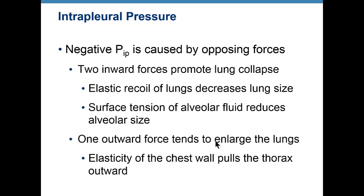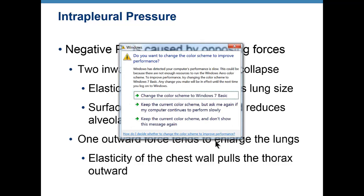Also, every time we inhale, the body wall pulls outward — that parietal pleura pulls outward — and the lungs are elastic, they want to stay their normal size. So they're pulled on by the parietal pleura. What happens to a space when I increase the volume? Pressure goes down. So every time we inhale, pressure goes down. The visceral pleura and the elastic tissue of the lung pulls it inward, so we're always stretching that space without adding any fluid to it, dropping pressure also.